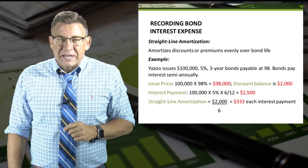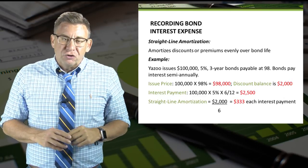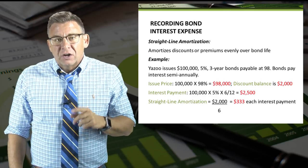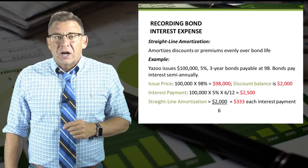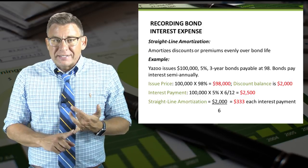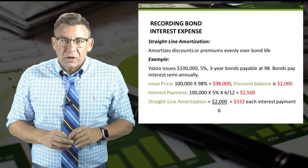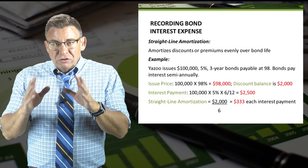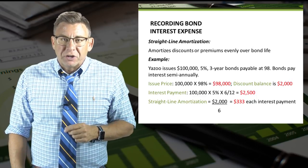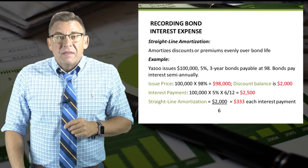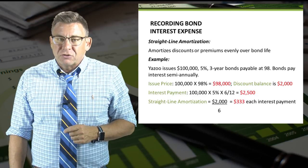Let's look at a typical example and pull out the key information needed to record interest expense. Yazoo issues $100,000, five percent, three-year bonds payable at 98. The bonds pay interest semi-annually. So the issue price is $98,000, meaning the discount balance is $2,000. The interest payment, using the formula principal times rate times time, is $2,500 every six months. The amount of discount amortization will be $333 every time we make an interest payment.